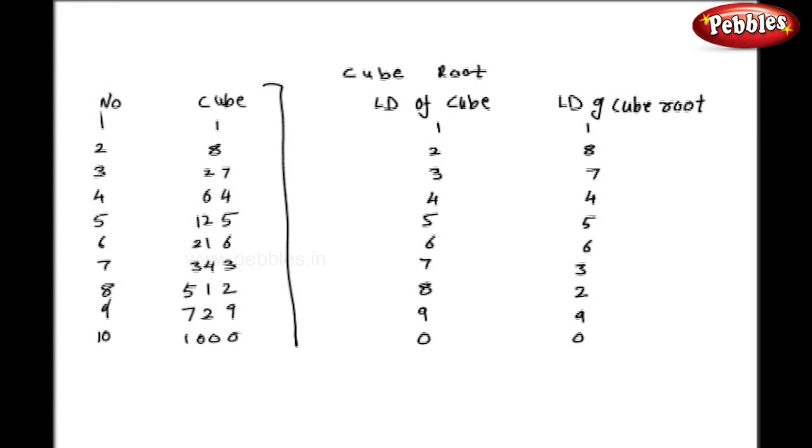For finding out the cube roots, we have to memorize the cubes of numbers 1 to 10. As you can see in the first table, we have numbers and their cubes. In the cubes column, just pay attention to the last figures, the summary of which I have given in the second table, i.e., the last digit of cubes and last digits of cube root.